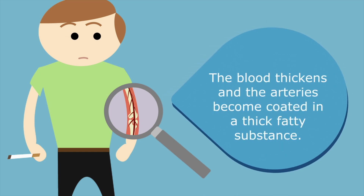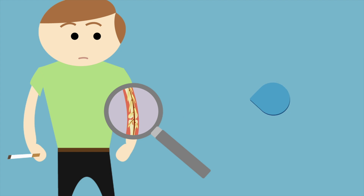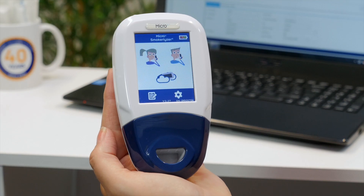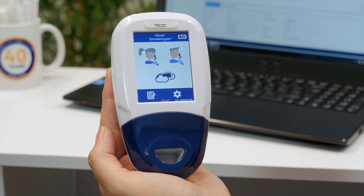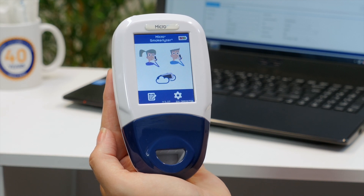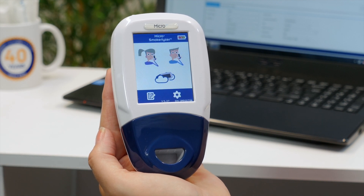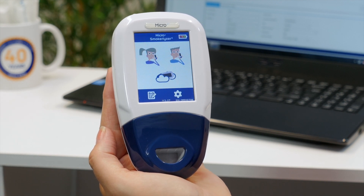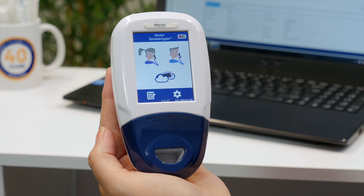These health complications include a higher risk of stroke or heart attack, shortness of breath, and poor circulation. The Micro+ Smokerlyzer is the gold standard in the Smokerlyzer range of breath CO monitors, which is used to help people quit smoking.